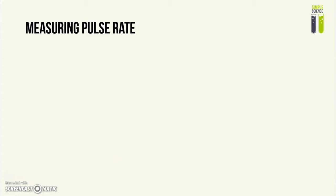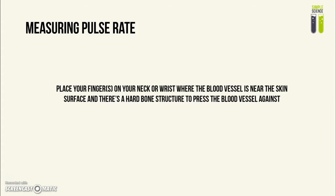The next thing you can do is to measure your pulse rate, and you probably would have done this experiment in school before, which is why they might ask you on your paper 6 about this. You place your fingers on your neck or wrist — these sites are where the blood vessels are near to the skin surface so that you can feel it better, and there is a hard bone structure underneath so you can press the vein against it to feel the pulse better. Then all you have to do is count the number of pulses you feel over a certain time period, for example, a minute.